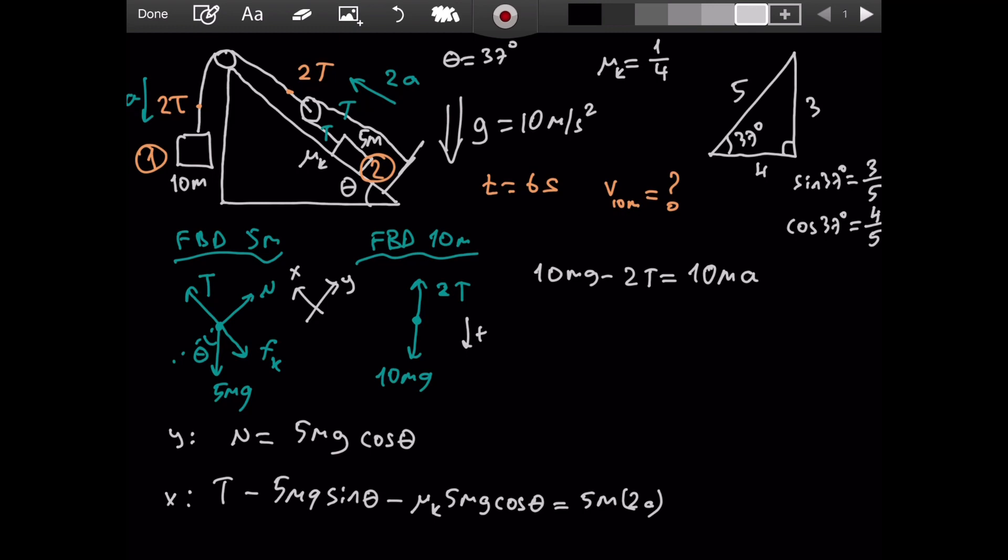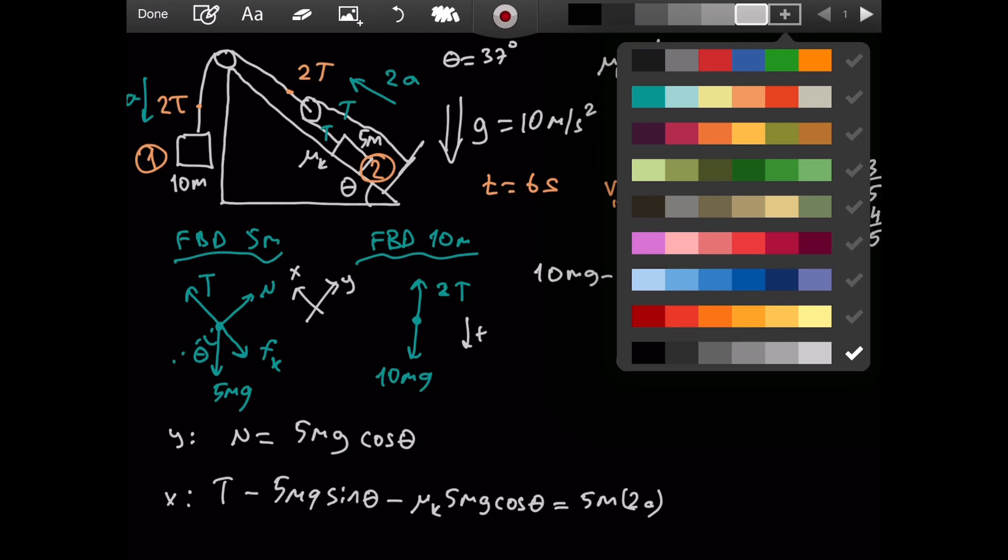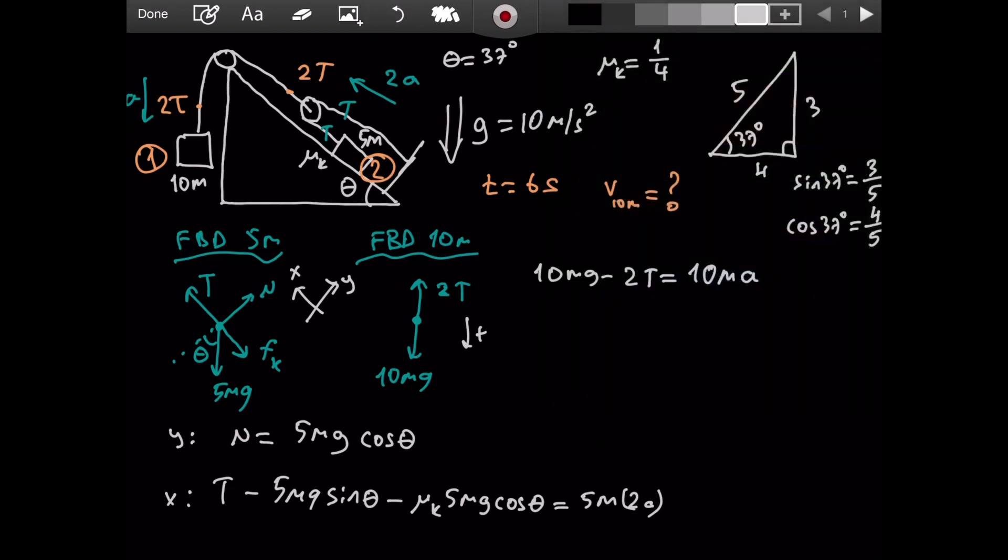So far, so good. Now, I'm going to write this equation below this one. So we will have T minus 5mg sine of theta minus, well actually, let's substitute now. So, what was sine of theta? It was 3 over 5. Right here, we said it. 3 over 5. Minus, what is mu k? It is given by the question, 1 over 4 times 5mg. What is cosine of theta? It is 4 over 5. This is going to equal 5 times 2, 10ma.